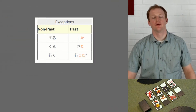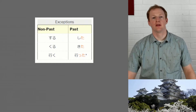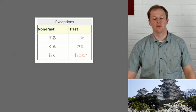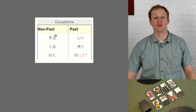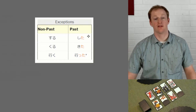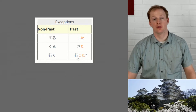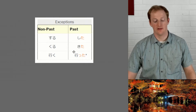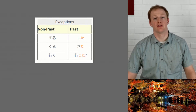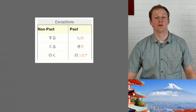The last thing to cover for u verbs is exceptions. We have our usual suspects, suru and kuru — just memorize these as shita and kita. We also have iku, meaning to go, which is a special exception that becomes itta; otherwise it follows all the usual verb conjugations.